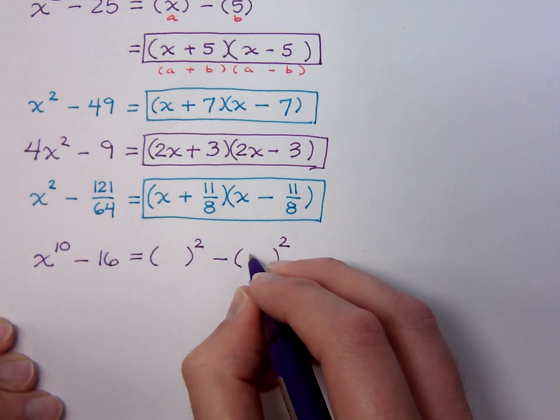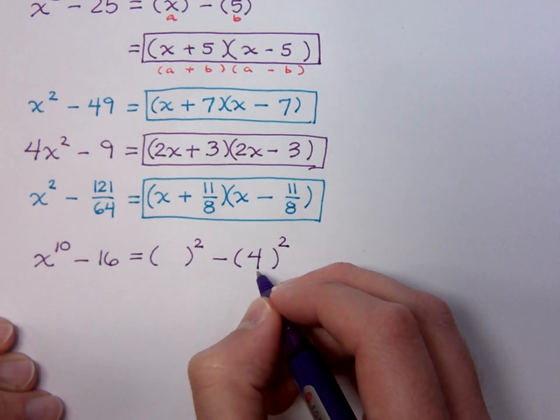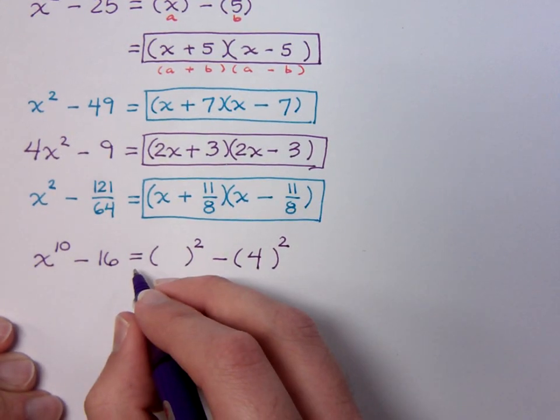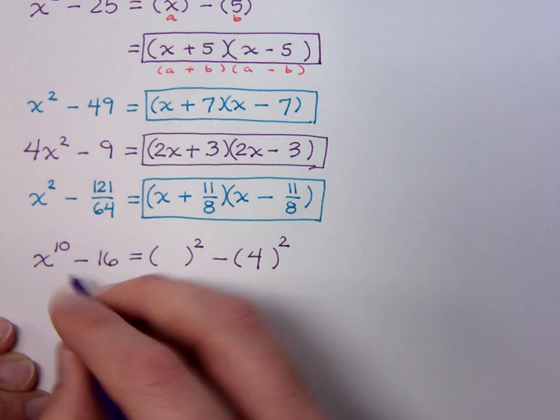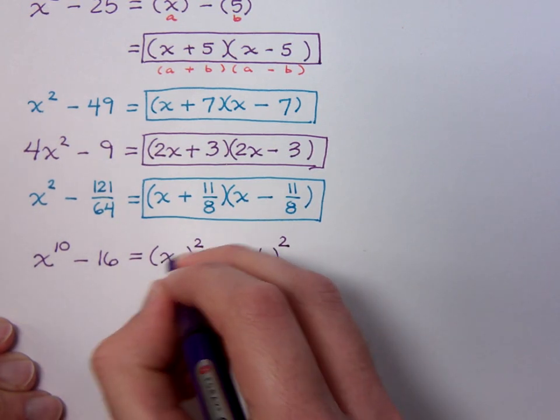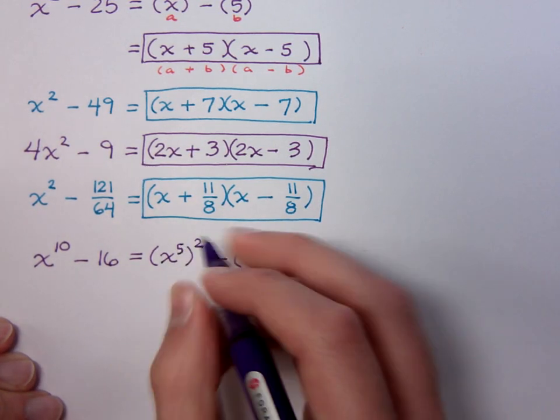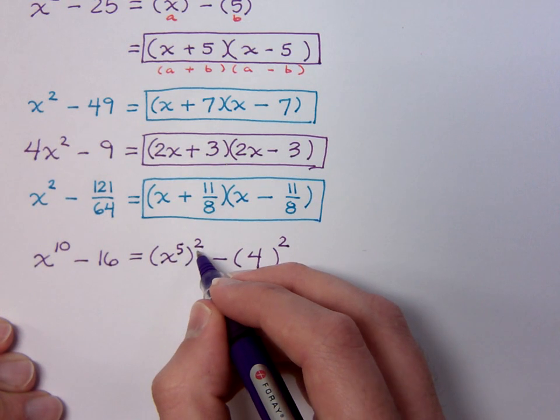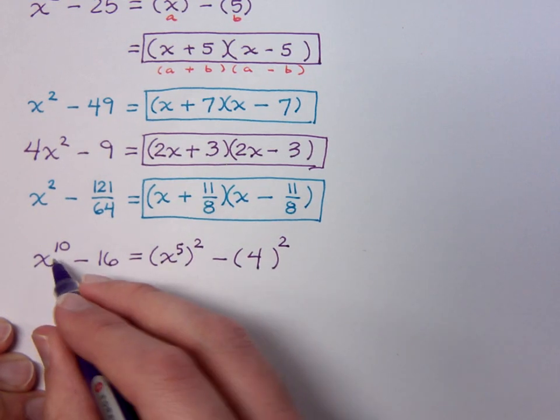Well, 16, of course, is going to be 4². That guy is easy. But x^10, you've got to know your properties of exponents. If I have x^5 in here, a power to a power means I would multiply those and I get my 10. So yeah, this guy is a square.